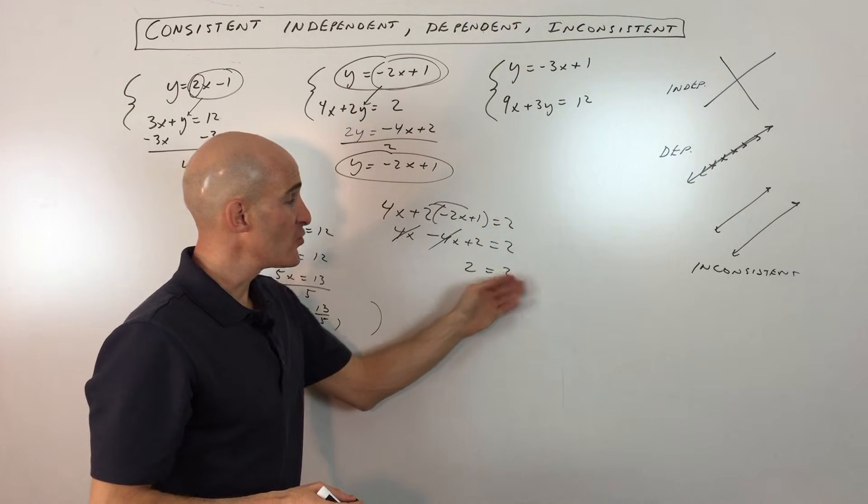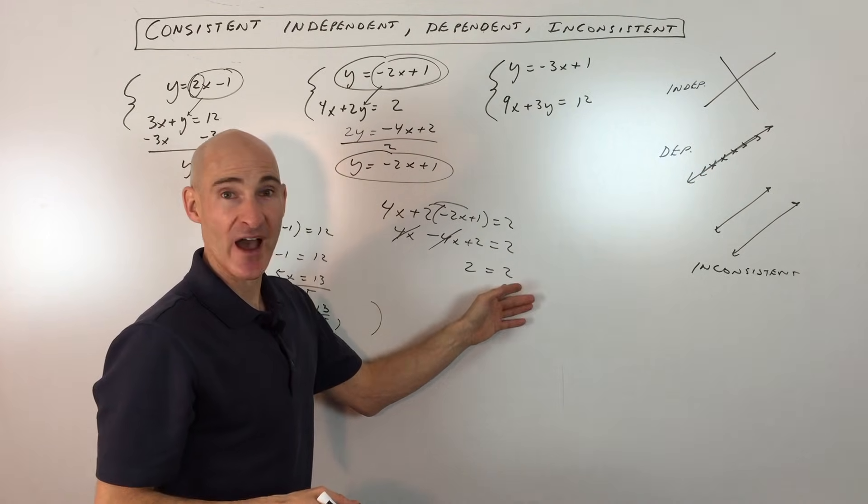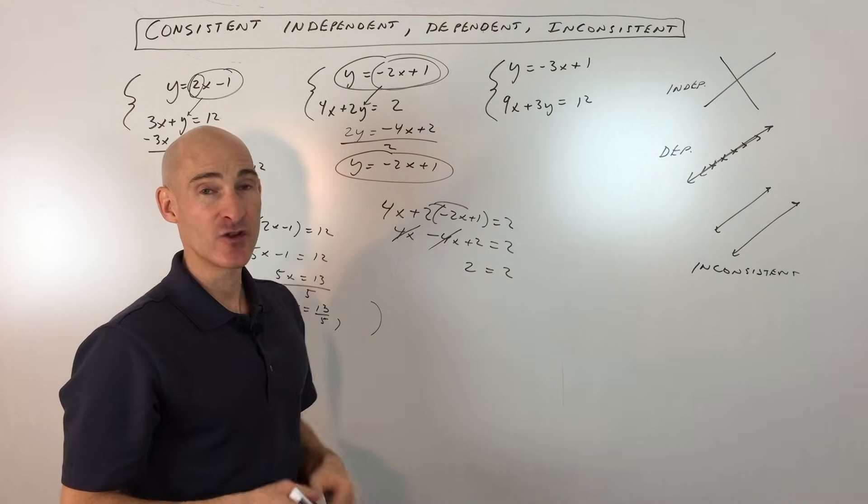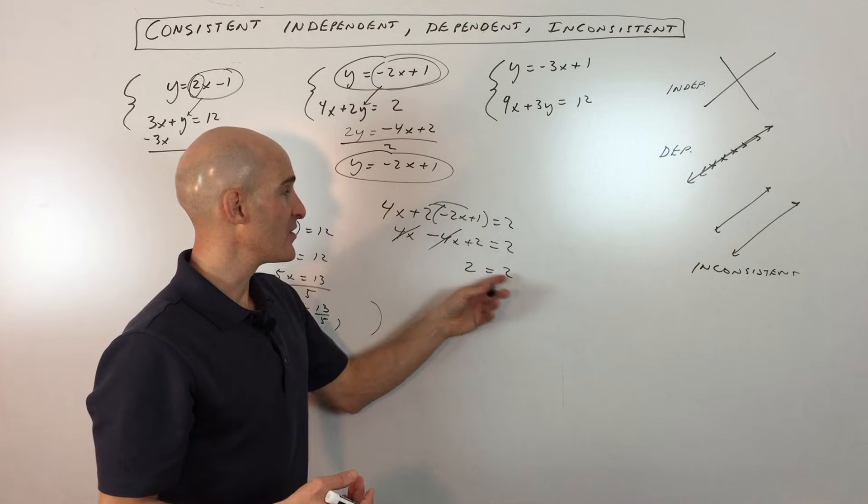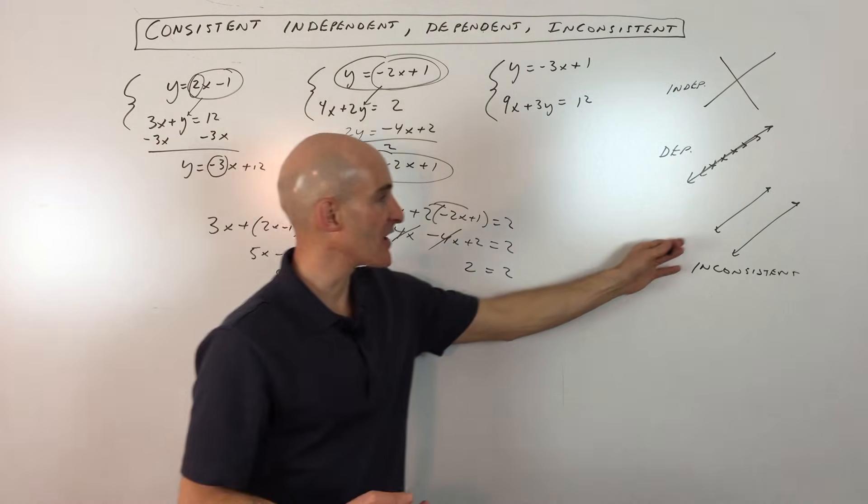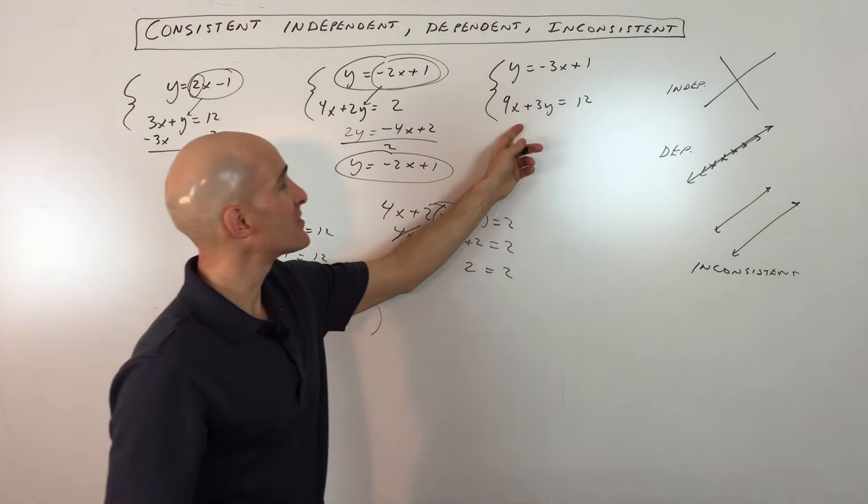Now, if you got something like 2 equals 3 or 0 equals 5, then that doesn't make any sense. And that's called inconsistent. And then no matter what you put in for x, the two lines are just not going to cross. They're not going to have a point in common. So let's look at this third example.